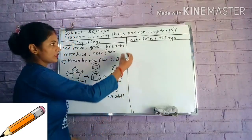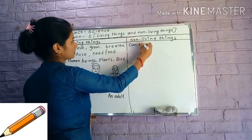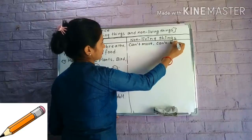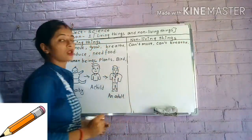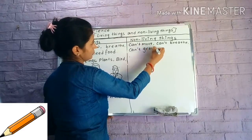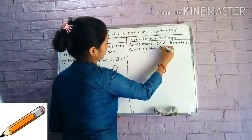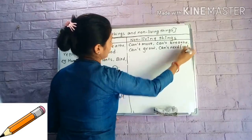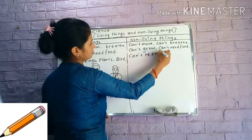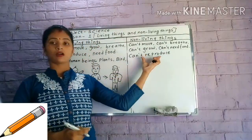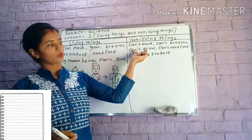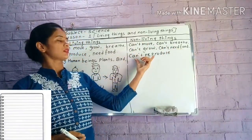The features of non-living things are as follows. I will write on the board. Non-living things cannot move. Non-living things cannot breathe. Non-living things cannot grow. Non-living things cannot need food. Non-living things cannot reproduce. These are the features of non-living things.